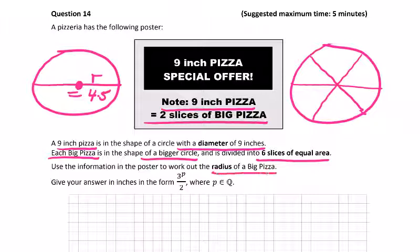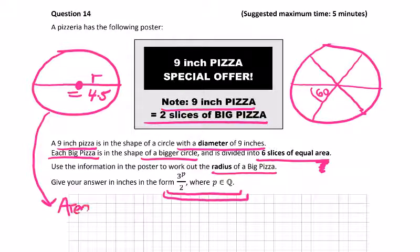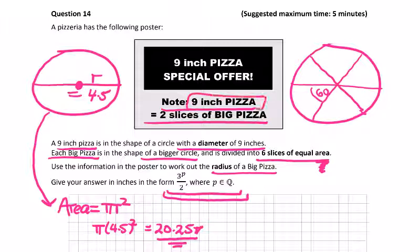Use the information in the poster to work out the radius of a big pizza. Give your answer in inches in this form, p is an element of Q. So p looks like it's going to be a fraction. Let's just start with what we know: we're looking for area in this case. The area of this pizza here is πr squared, so that's pi times 4.5 squared, which is 20.25π. So the radius of the big one: 20.25π, this is our 9 inch. What's this equal to? It's equal to 2 slices of the big pizza, so 2 out of 6 πr squared, and the radius of the big pizza is the only unknown now.